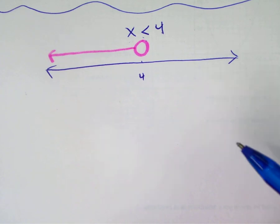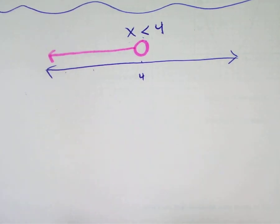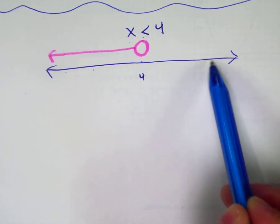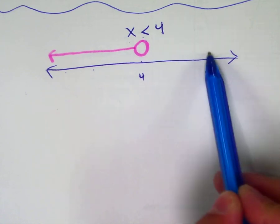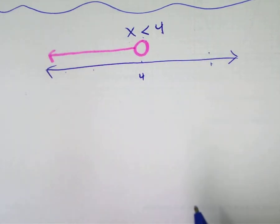Class, give me a number that's smaller than 4. 3, 2. Class, give me a number that is bigger than 4. 6. 6 is not less than 4. That's why it's not in the pink area. The pink area is saying all of our solutions.